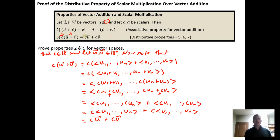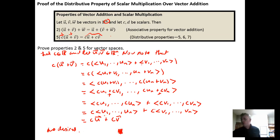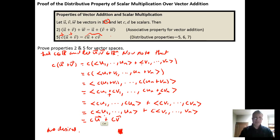Which is what we needed to show — that the left-hand side is equivalent to the right-hand side. So we say 'which is what we needed to show' or 'as desired,' something to wrap up the proof and give it a little tombstone.